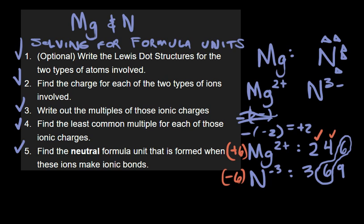How many of each of these ions do we need to get to those overall charges? We need one, two, three of these magnesium ions, and we need one, two of these nitrogen ions. If I were to write this out, it would be Mg₃N₂, which happens to be pronounced magnesium nitride.